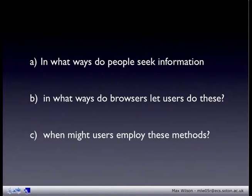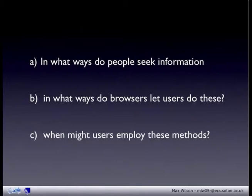So now we have to consider when might users employ these tactics. For this we use Belkin's model from 1995, where he defines 16 unique conditions that users may be in. We don't have time to go into this analysis now, but for each of these different situations a user might be in, you can attribute different tactics they may use, and then quantify the support for each of these 16 different types of users, and then work out which users you may want to try and support further.